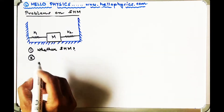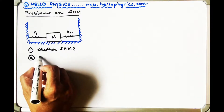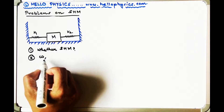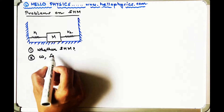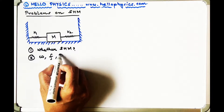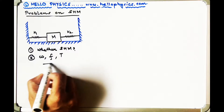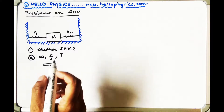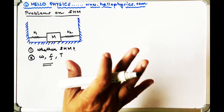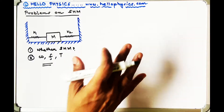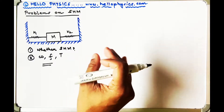As a second step, you have to find out what is omega, what is F, and what is T. So this is the basic definition of the problem.